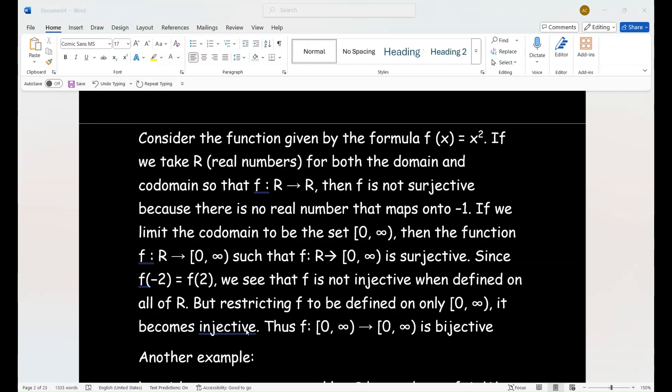All right, I have two more examples. You have the function given by the formula f(x) = x². And if we take R, the real numbers for both the domain and codomain, then f is not surjective because there is no real number that maps onto negative one. But if you limit the codomain to be the set from zero to infinity, then you have a function that is surjective. Because in that case, f(-2) equals f(2). And so you see that f is not injective when defined on all of the real numbers. But if you restrict f to be defined on only zero to infinity, it does become injective. Definitions matter. Restrictions matter. So if f goes from zero to infinity, we say that it is bijective.